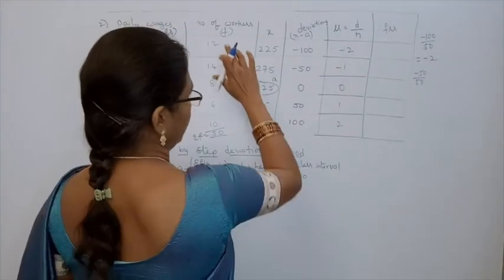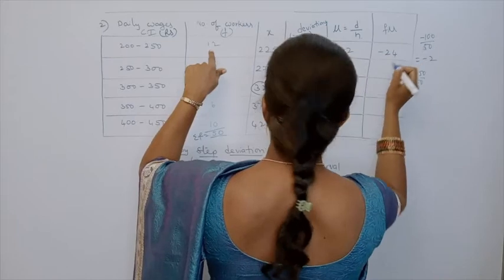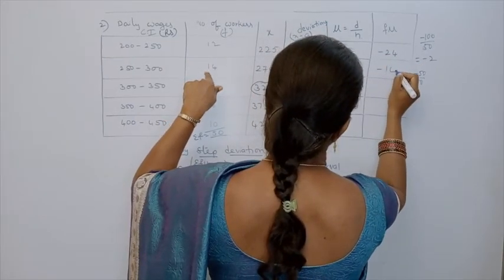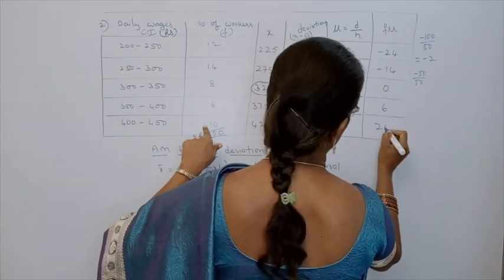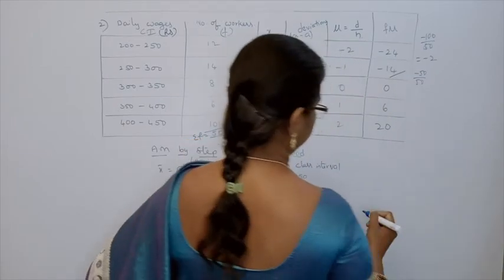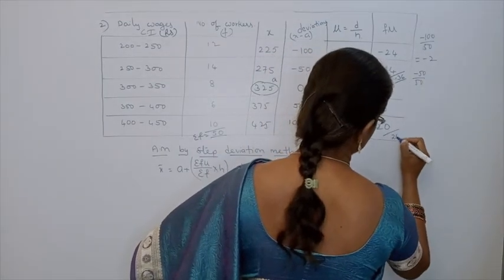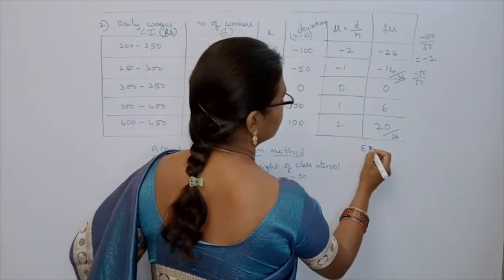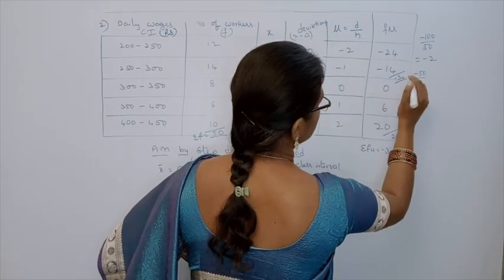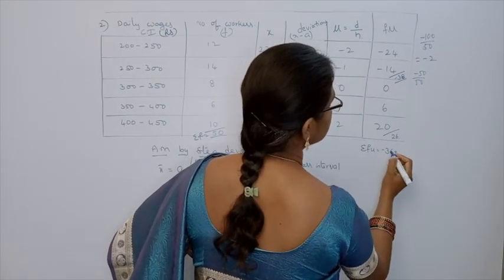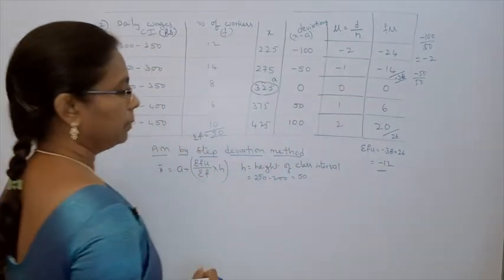Next, FU means frequency × U. So: 12 × (−2) = −24; 14 × (−1) = −14; 8 × 0 = 0; 6 × 1 = 6; 10 × 2 = 20. Sum of negative values: −38. Sum of positive values: +26. So ΣFU = −38 + 26 = −12.